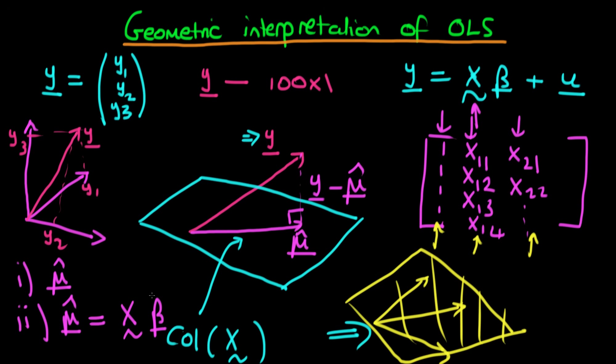So we can represent mu hat as being equal to X times beta hat. Don't worry if you don't understand everything in this video — we're going to talk through a few examples in the next few videos. I wanted to provide this as an introduction to the geometric interpretation of least squares, and the fact that we can think about least squares geometrically.